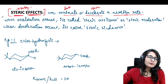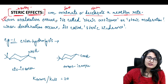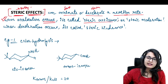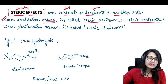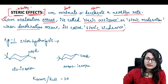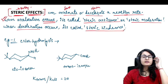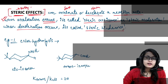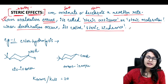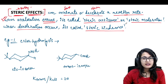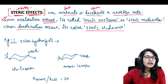When the acceleration occurs, it is called steric assistance or steric acceleration. When the deceleration occurs, it is called steric hindrance. You have mostly heard about steric hindrance and very less about steric assistance. So let's talk about this.